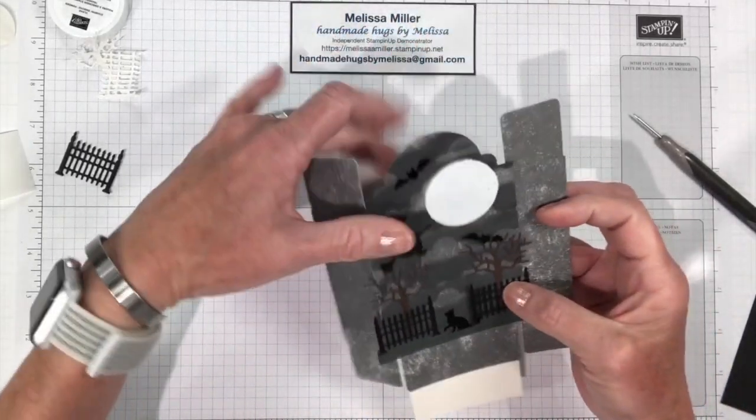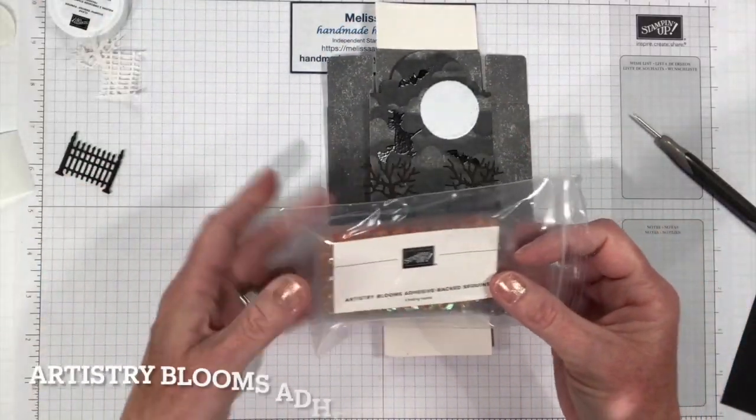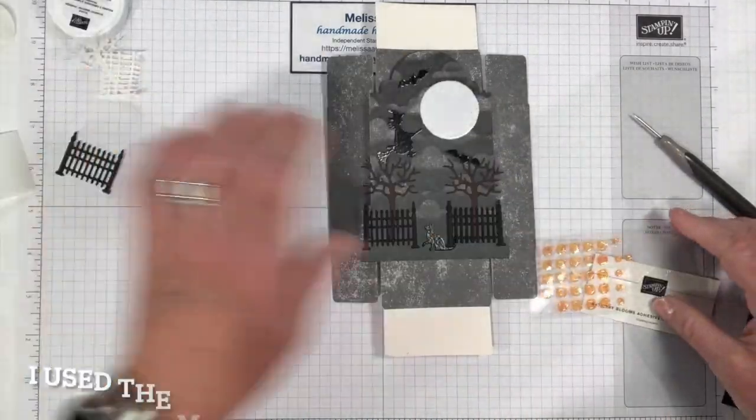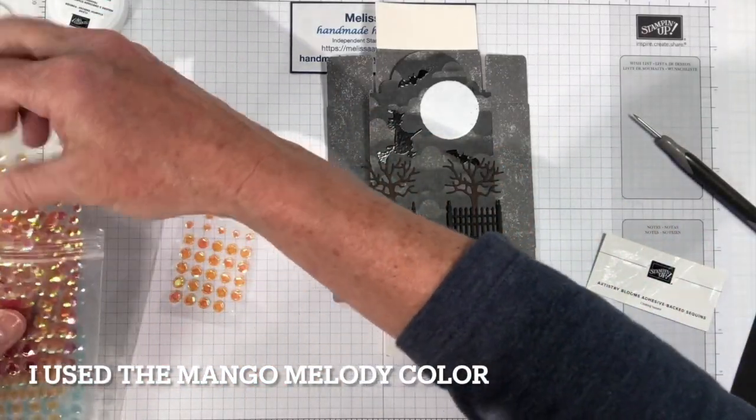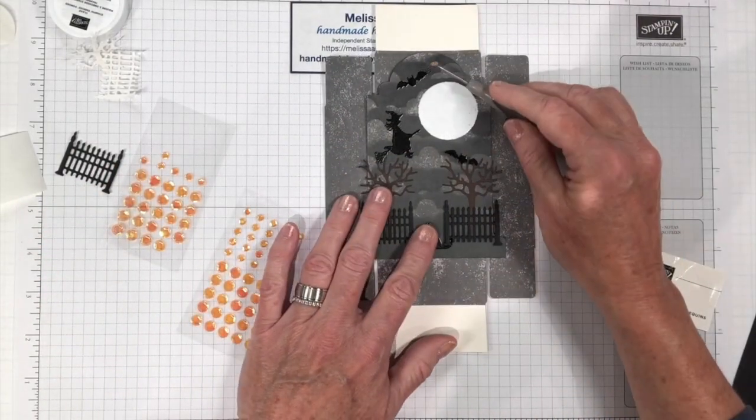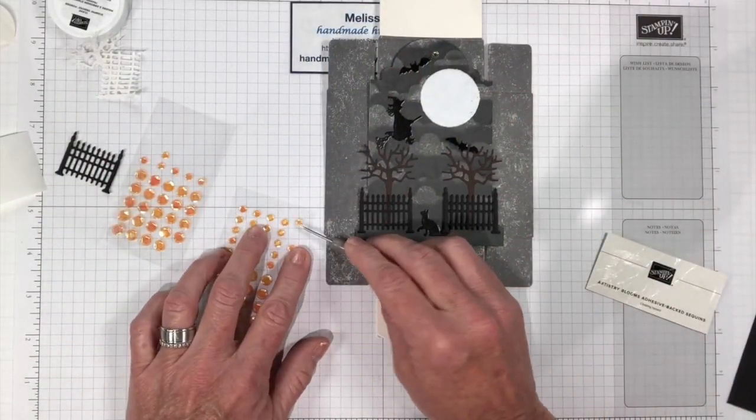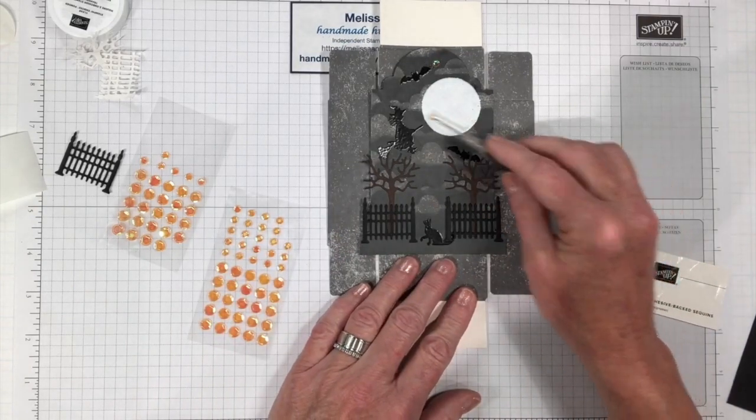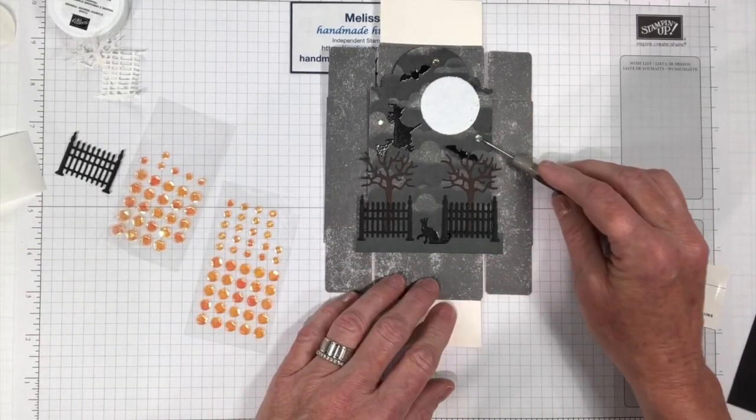And then all we need to do is add some sequins. I am using my Artistry Blooms adhesive-backed sequins. They come in a pack like this. You get several colors in here. We are going to be using the orange ones. Let's put some of the smaller ones on there. We're just going to add those randomly around our moon. Let's put one over here by the witch. And we can put one down here on this side.